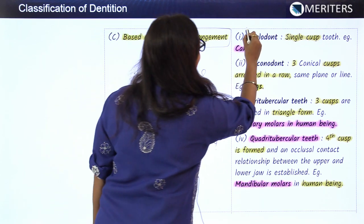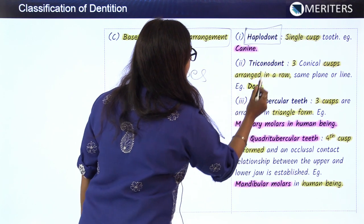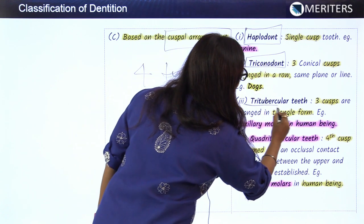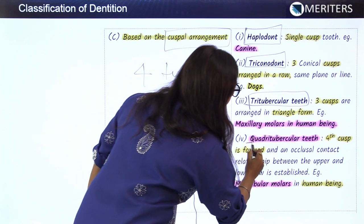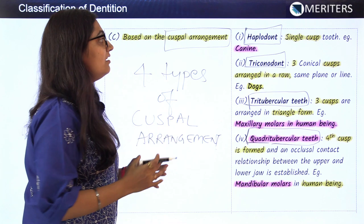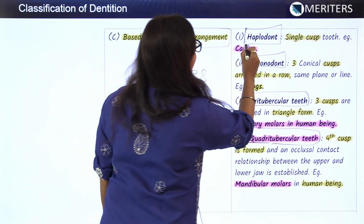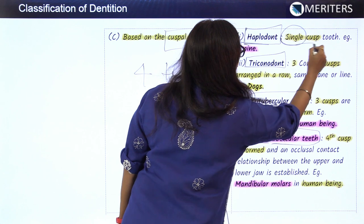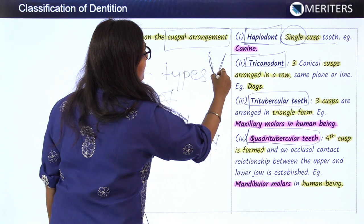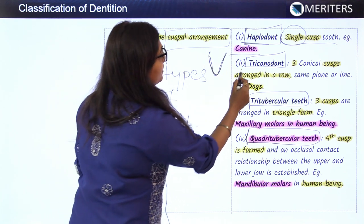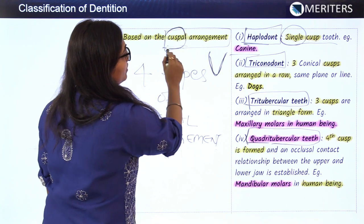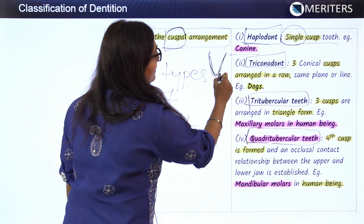The first type is haplodont, the second is triconodont, the third is tritubercular teeth, and the fourth is quadritubercular teeth. Haplodont means single cusp tooth — the canine is an example, as it has a single cusp. So canine is known as a haplodont tooth. Then comes triconodont — here we are looking at cuspal arrangement.